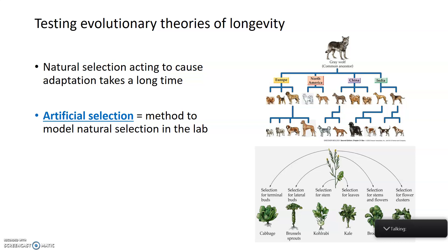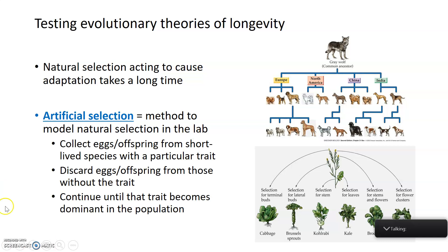With artificial selection, rather than letting nature select the traits we're interested in studying, we as scientists select those traits ourselves. We collect eggs or offspring from a short-lived species with the trait of interest, discard all offspring that don't have that trait, and continue until the trait — in this case one involved in longevity or aging — becomes dominant in the population. You've seen artificial selection at work before in pet breeding and crop breeding: dog domestication and brassica crop development are examples.